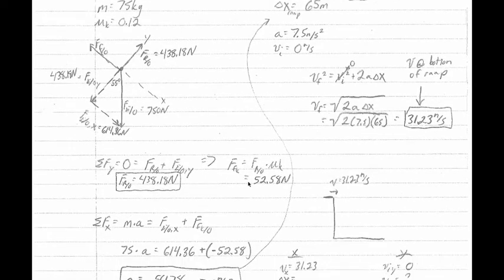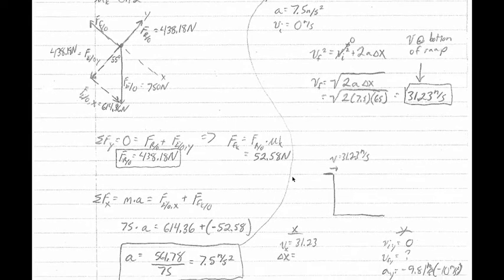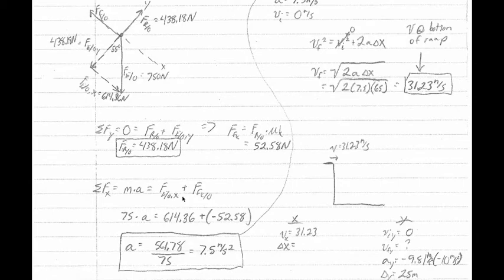So knowing we're going to have to use our coefficient of friction, I instantly came over here. I know that the force of kinetic friction is going to be equal to the normal force times the mu sub k value. Using the mu sub k value of 0.12, we're able to find that the force of kinetic friction is 52.58 newtons.